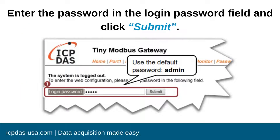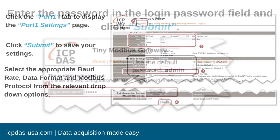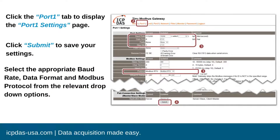To configure the serial port, enter the default password and login. Click the Port 1 tab to display Port 1's settings page. Select the appropriate baud rate, data format, and Modbus protocol from the relevant drop-down options. Please note these settings will vary depending on your Modbus device. Save your settings by clicking Submit.